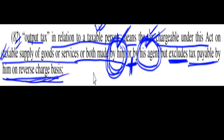Tax payable by the supplier on reverse charge basis is excluded. So when the supplier is required to pay tax on reverse charge basis, that tax amount is excluded while calculating output tax. Output tax is tax on supplies made by the person himself or by his agent.